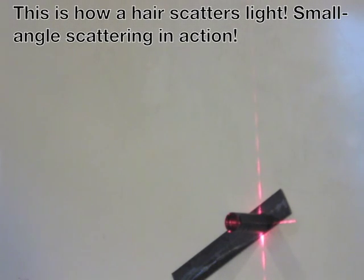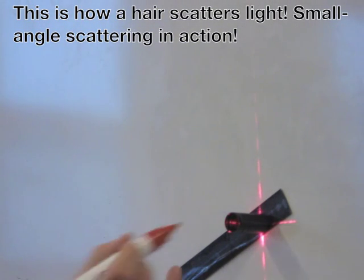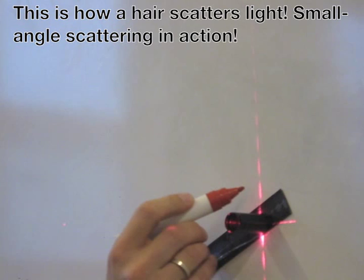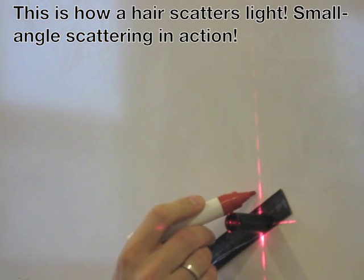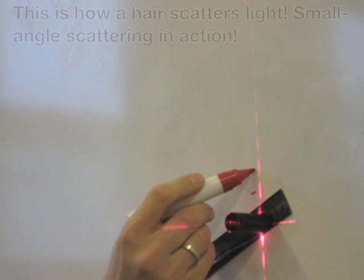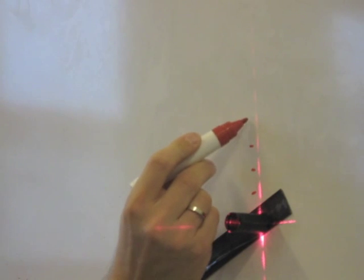So our first donor is named Kirsten and her hair produces this oscillatory pattern. So we have oscillation maxima over here, over here, over here, and over here.